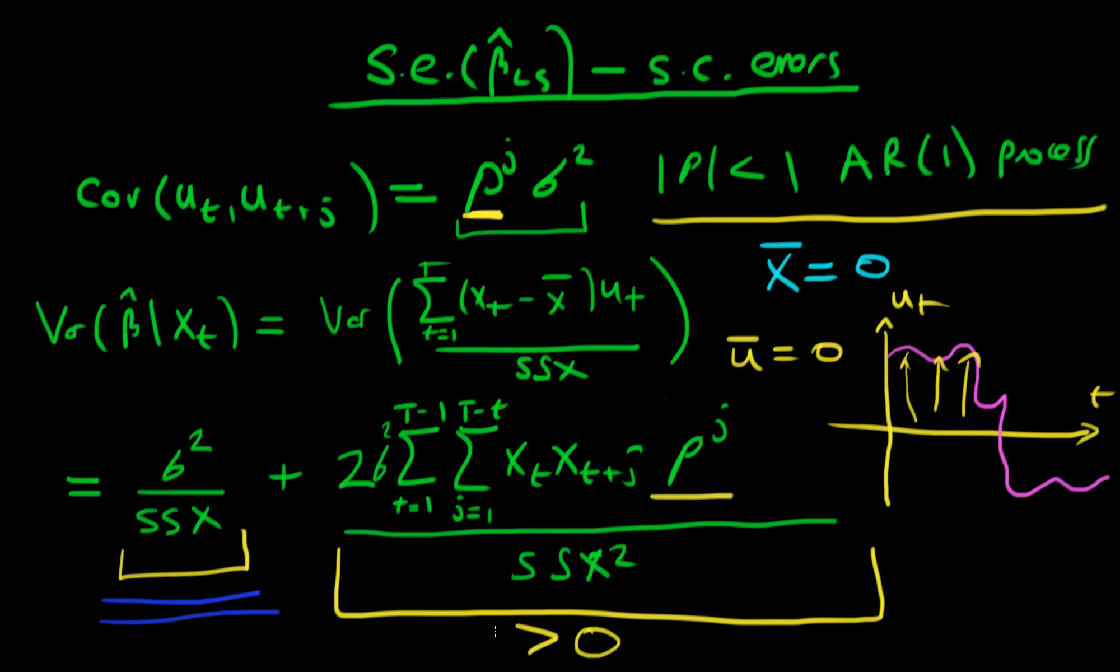And it's really important when we are estimating the variance of beta hat that we do include some sort of estimate of this second term here, because if we don't, our inference about the population is likely to be very misguided.